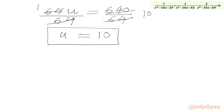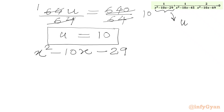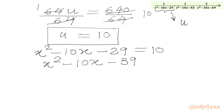Now u was our substitution: u = x² - 10x - 29. So we write x² - 10x - 29 = 10, and moving all terms to the left-hand side gives x² - 10x - 39 = 0.